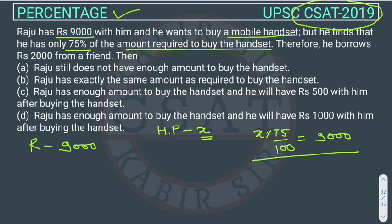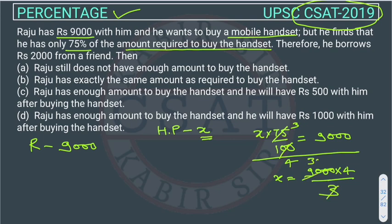One side he is saying Raju is having Rs.9,000, and on the other side the question is saying that he is having 75% of the mobile handset price. So we will cancel this — from 25, from here we can calculate the value of X. 3 will come here, so from 3 this will go, so it will be 3,000, so the value of X will be 12,000. The price of the mobile handset is Rs.12,000.